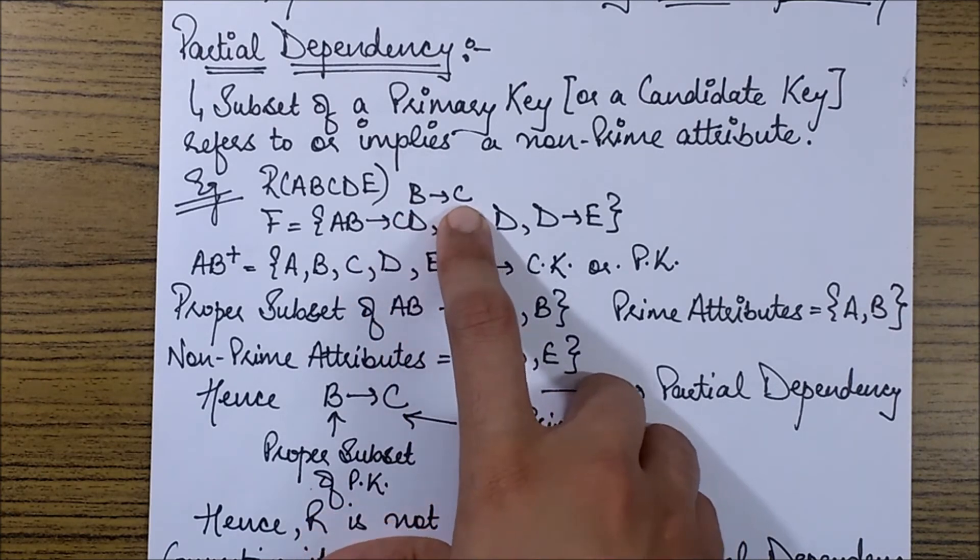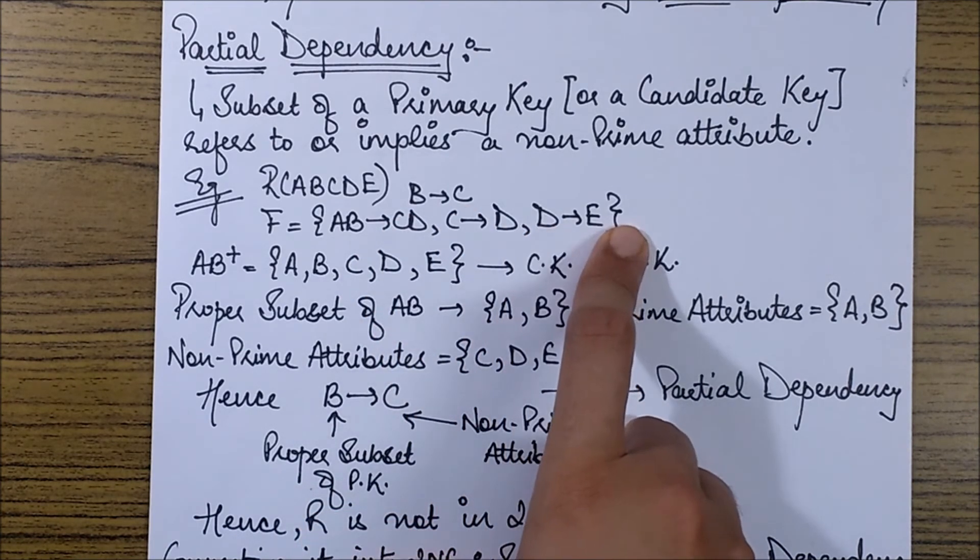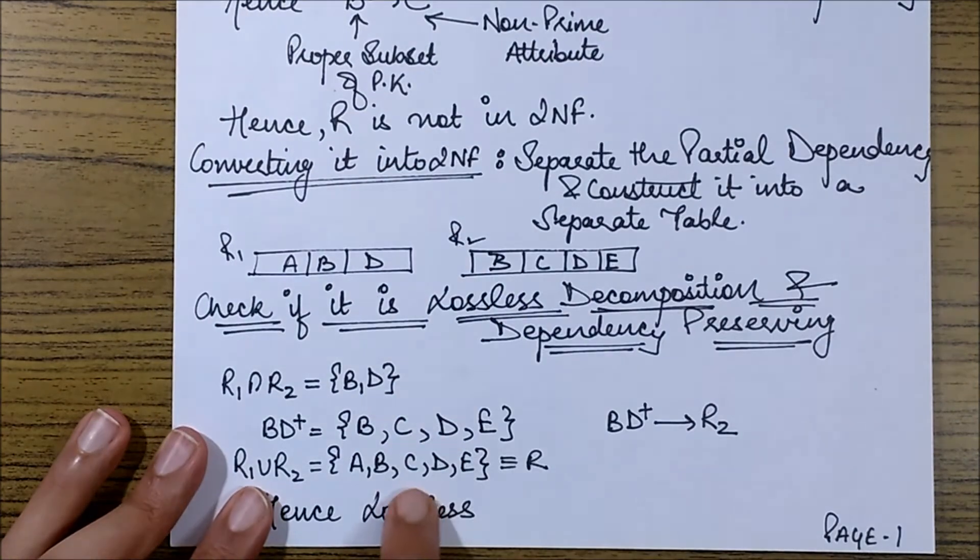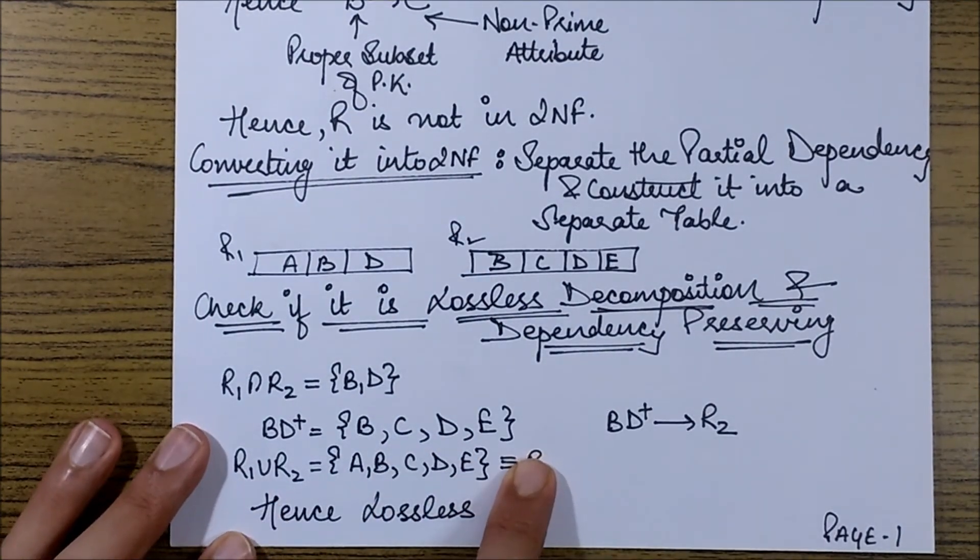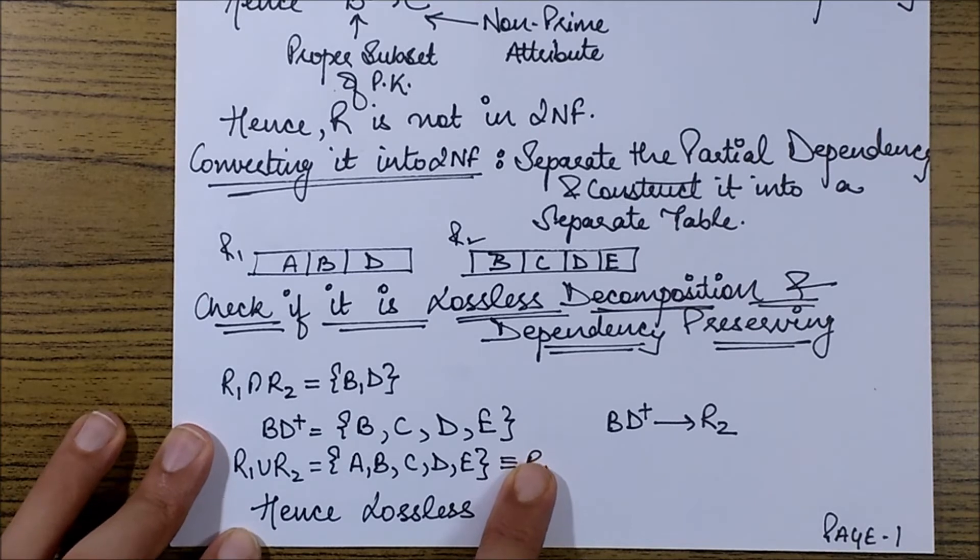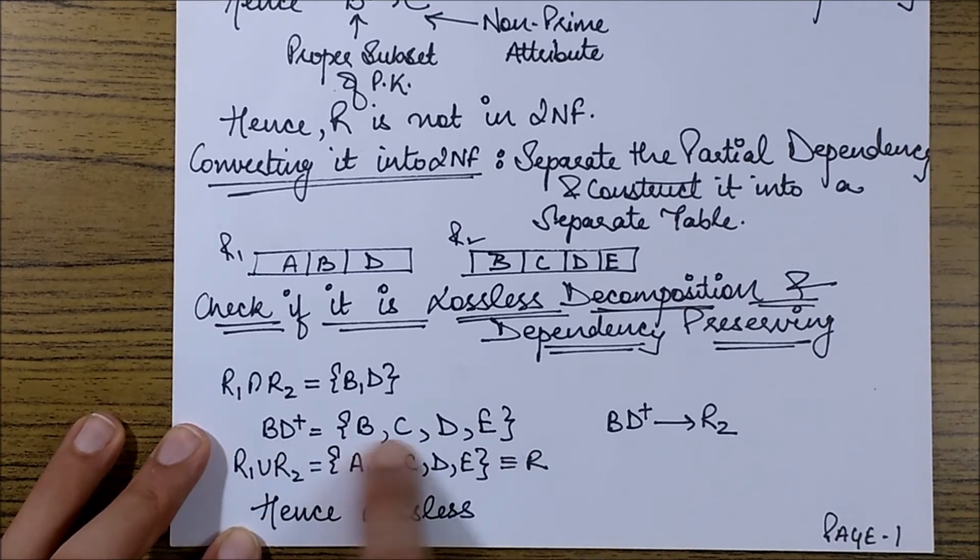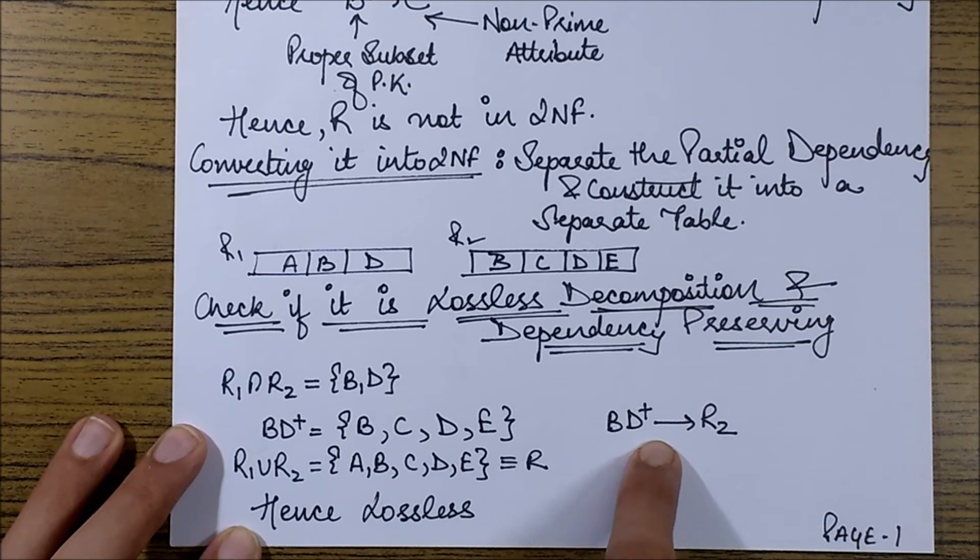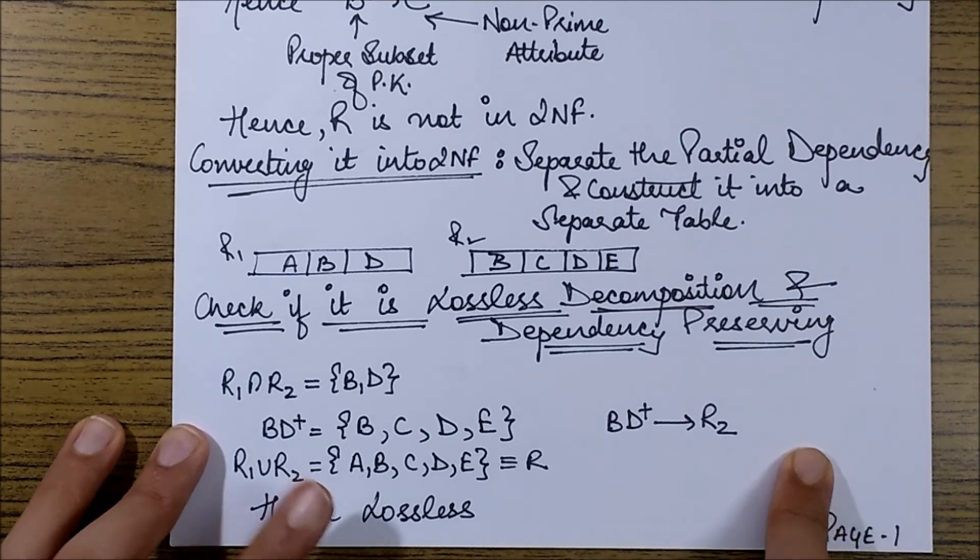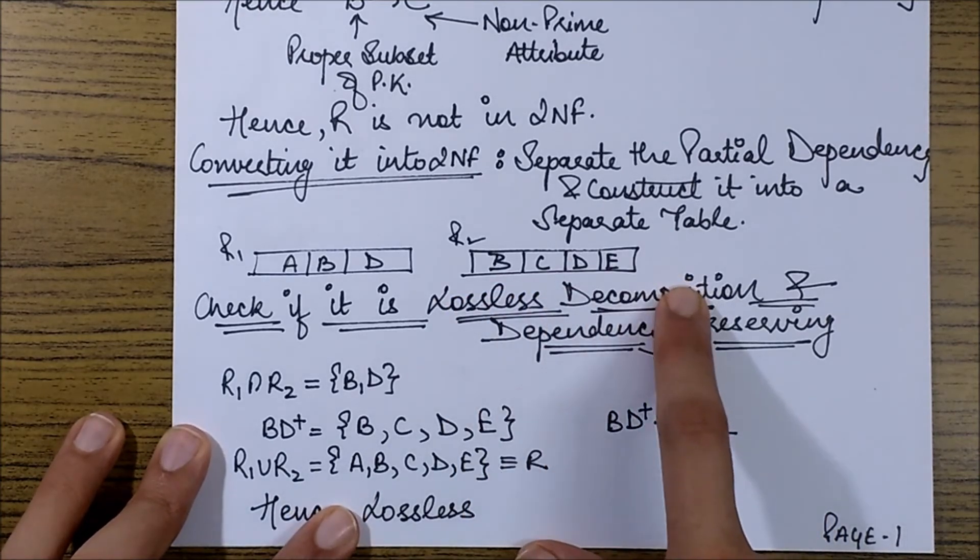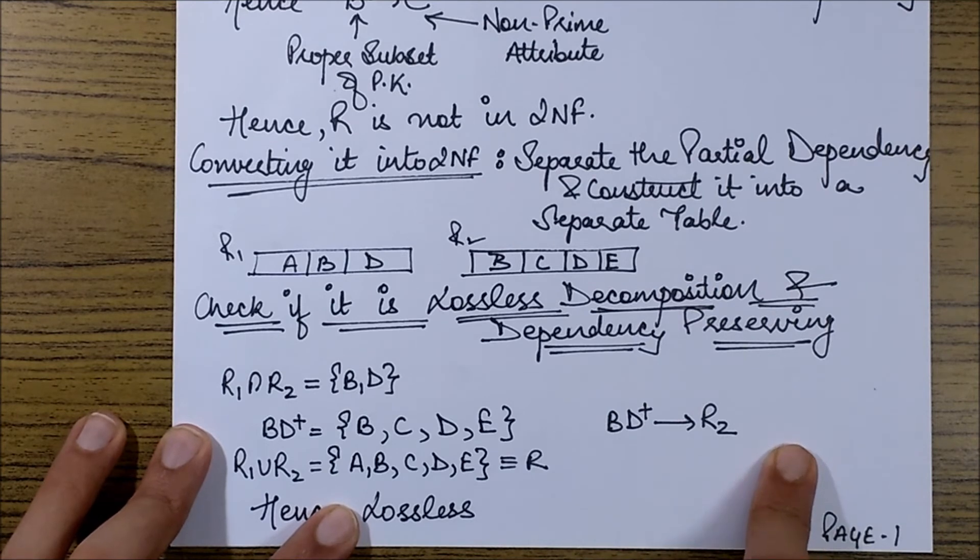BD closure is B, D and we check the functional dependency set for the other things. From B I am able to get C. And from D I am also able to get E. So I have added C and E over here. Since there are no other attributes which I am able to reach with BD. This is the BD closure. And if I see BD closure is able to determine R2 which contains only B, C, D, E. So this is able to determine R2.